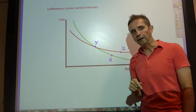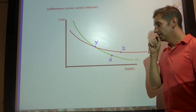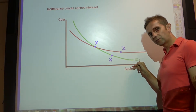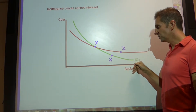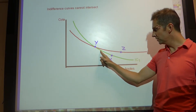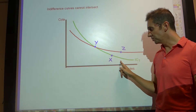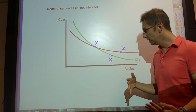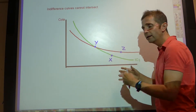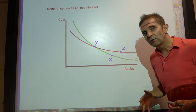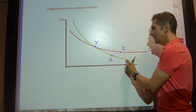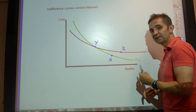Now take this diagram, which shows two indifference curves, IC1 and IC2, but they intersect at point Y. This suggests that the consumer, if operating on indifference curve one, is indifferent between consuming Y and X — both on the green line. The consumer would be quite happy to be at X or Y because they would be deriving the same level of satisfaction. Any point on indifference curve one yields the same level of satisfaction.